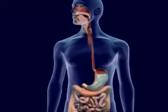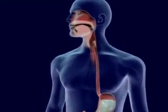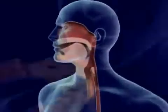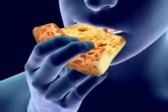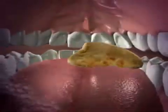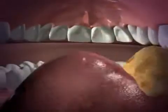In digestion, food is changed by the organs into a soluble form to be absorbed by the body. Food in the mouth is mixed with saliva. Saliva begins to dissolve the food as the teeth grind and cut it.